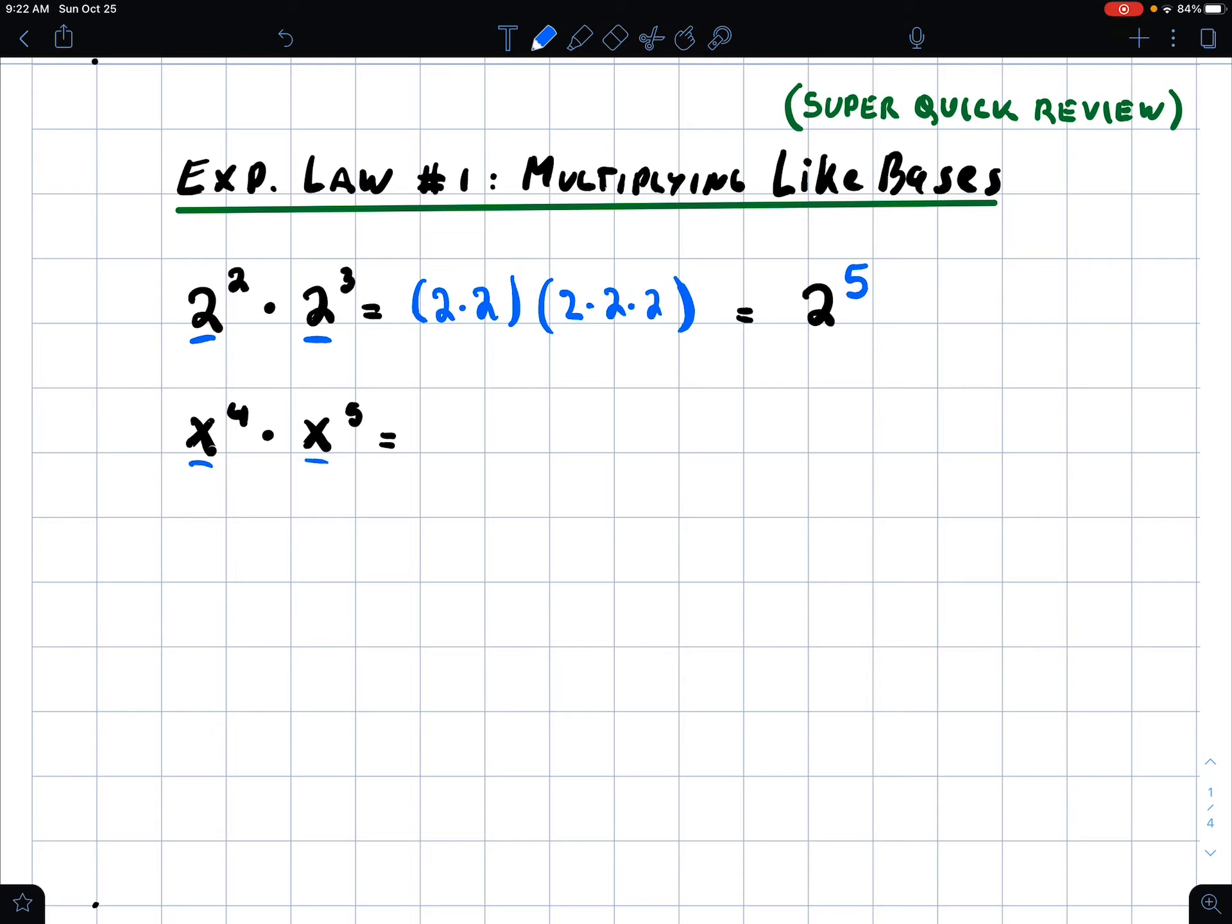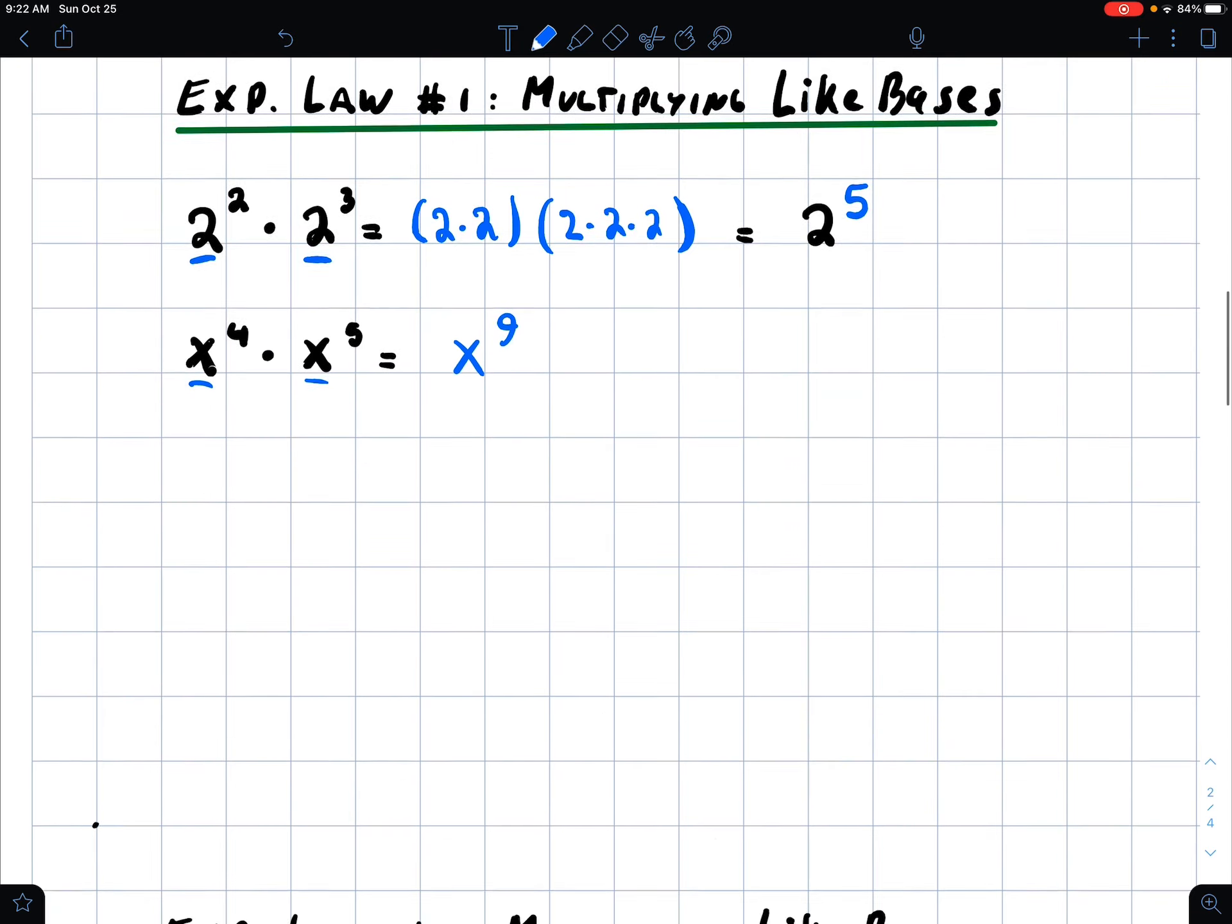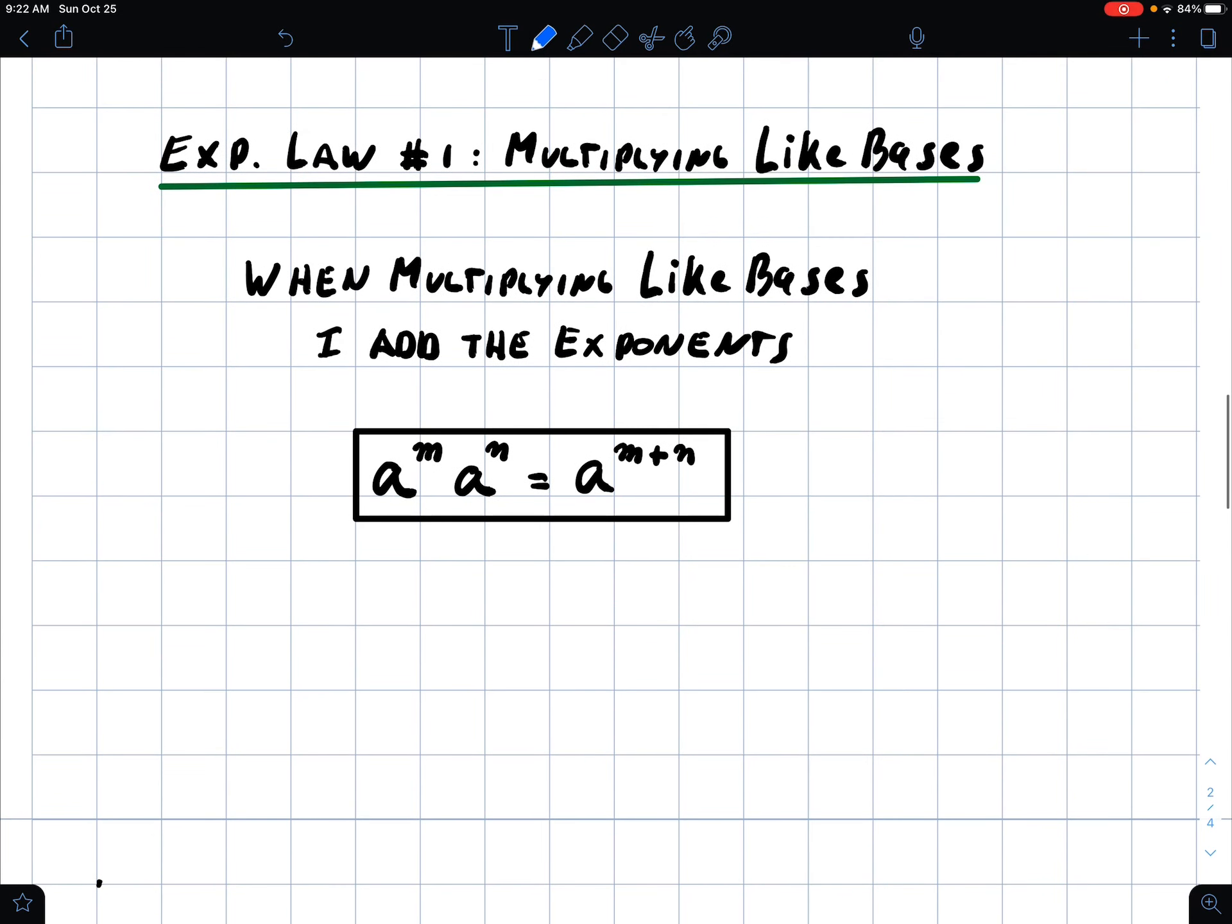...they are also like bases. Therefore, I have 4 of them, I got 5 of them, add that to get 9 of them. And that's why we can say, summarizing the first law, that when multiplying like bases I add the exponents.